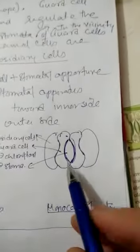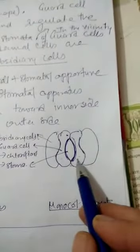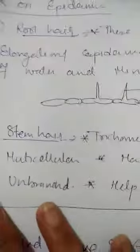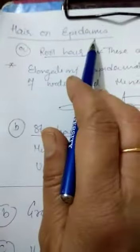And in monocot, the guard cells are dumbbell-shaped. So this is the difference of stomata of monocot and dicot. Now we are coming to a very important term - trichomes. Actually it comes under the heading of hair present on epidermis.